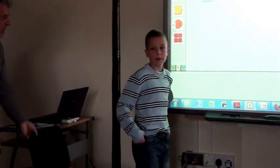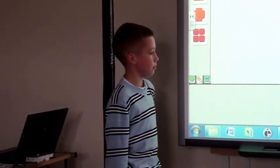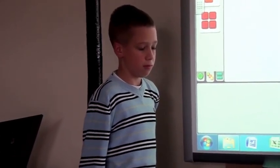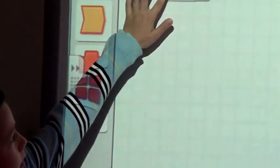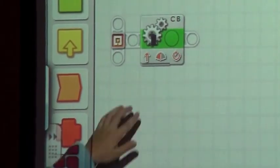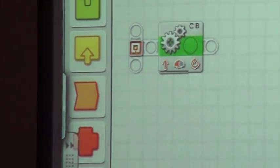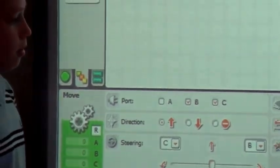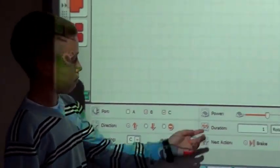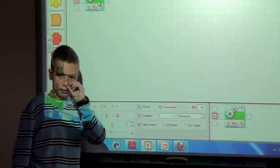How to program robot go forward? We can do it with two programs. We can use move block, it can go forward or backward. We use power and how many rotations it's done.